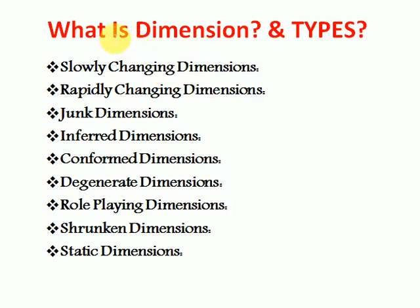This is an overview on dimension. There are different types of dimensions. The first one is a slowly changing dimension. If you have a requirement where you want to store the data when master data is getting changed — that is called slowly changing dimension. There are three types of slowly changing dimensions, which I will explain in a different video. So that dimension data can change in future, and your dimension should support storing those changed records.